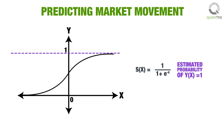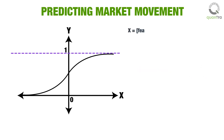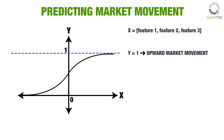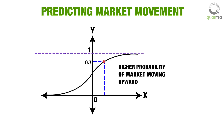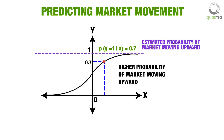Consider the example of predicting the market movement for the next day. Assume the vector x contains different features being considered while making a decision. The y equal to 1 line represents that the market should move upwards; conversely, y equal to 0 represents the market is expected to move downwards. For a particular input feature vector x, if the sigmoid function returns a value of 0.7, the point is closer to the y equal to 1 line, and hence there is a higher probability of the market moving upwards. In fact, the value 0.7 can be considered the estimated probability of the market moving in the upward direction.